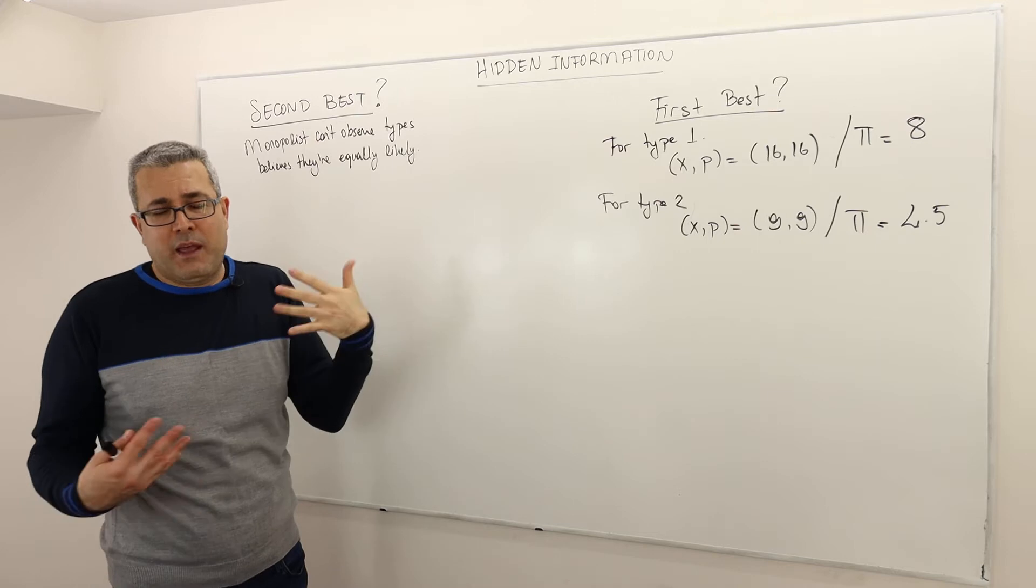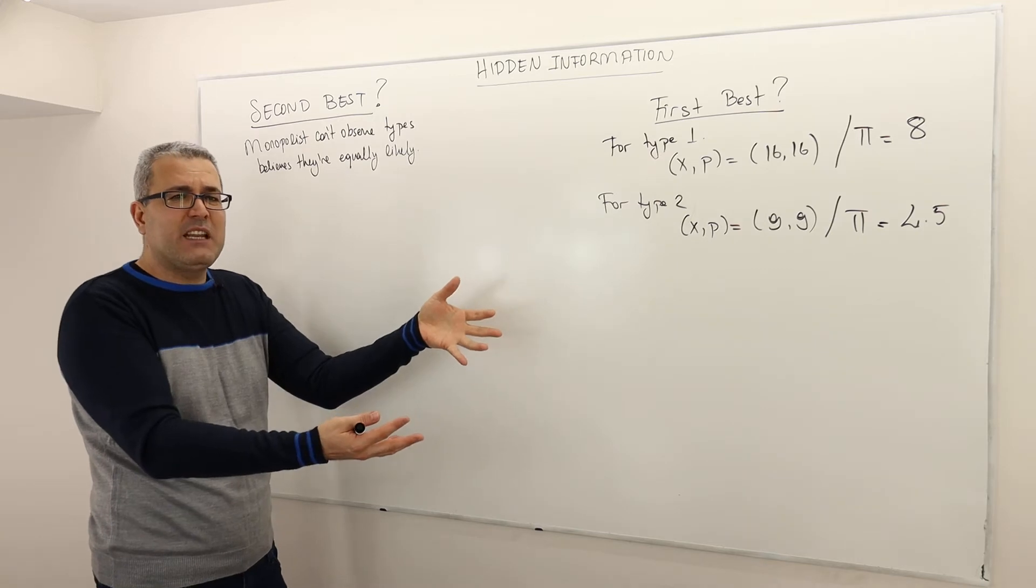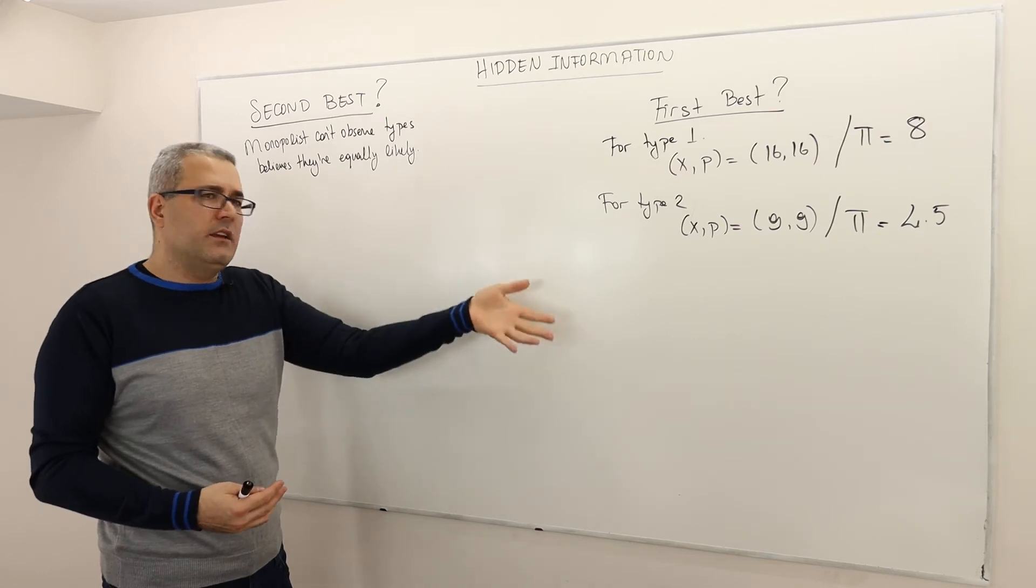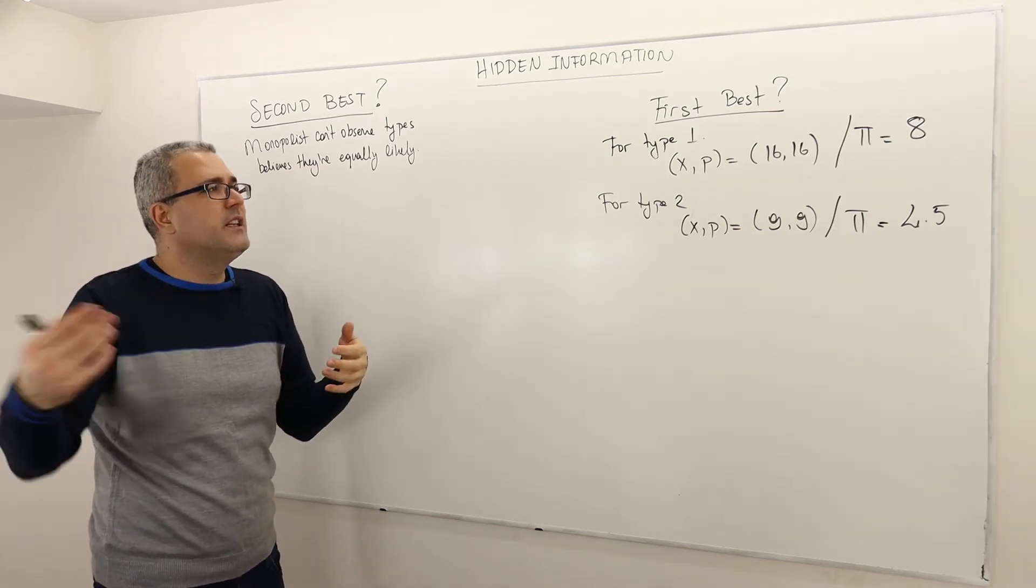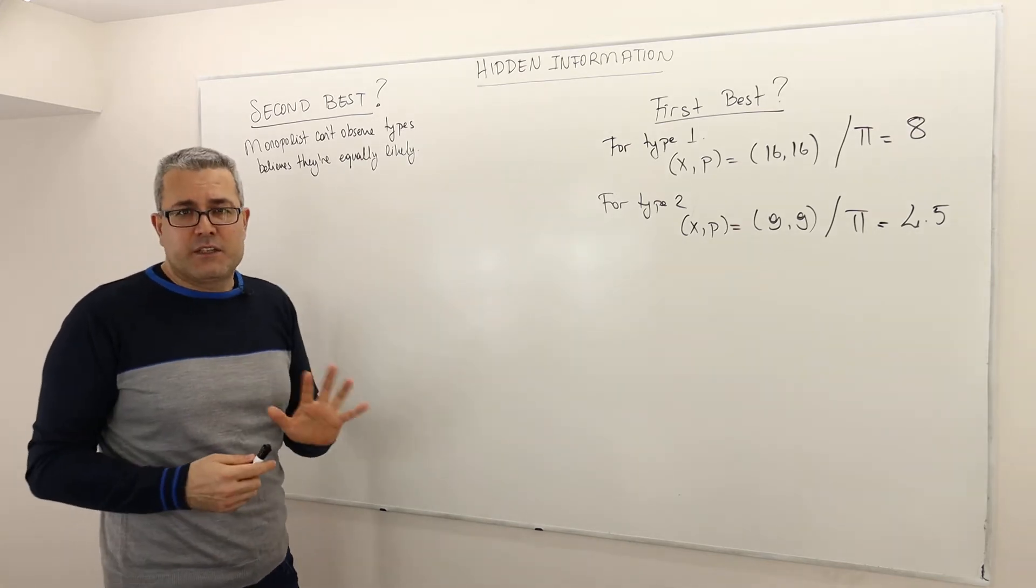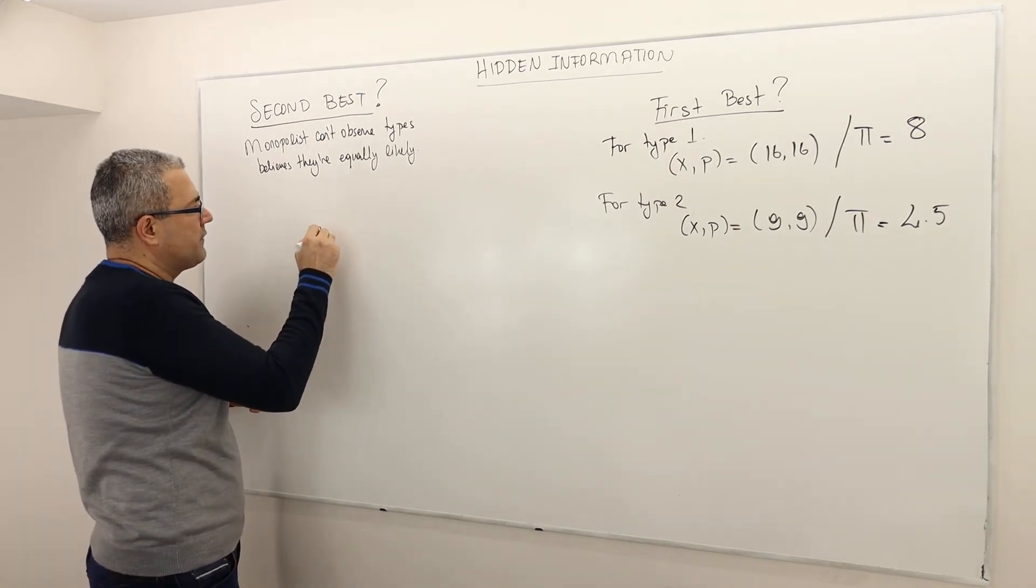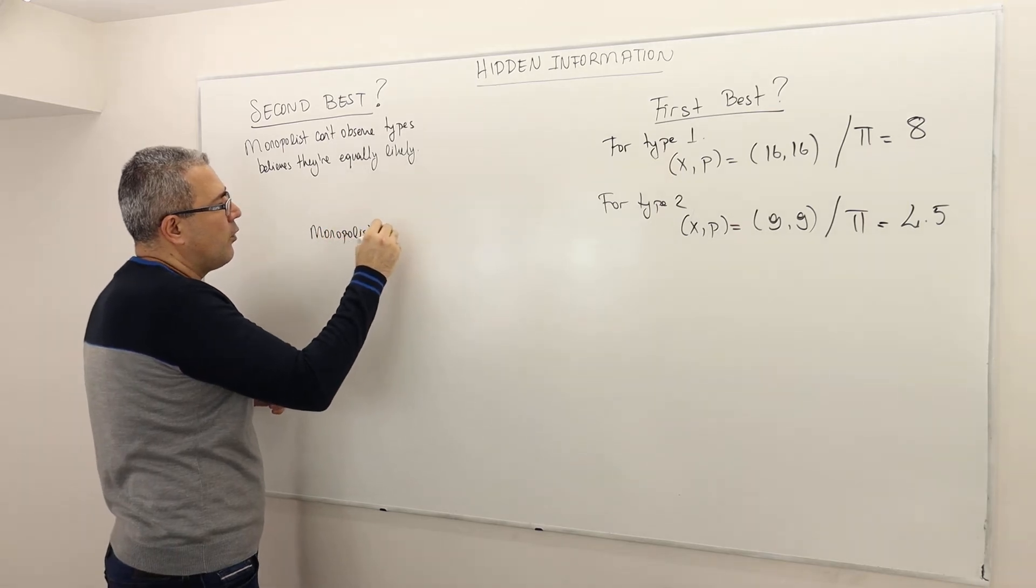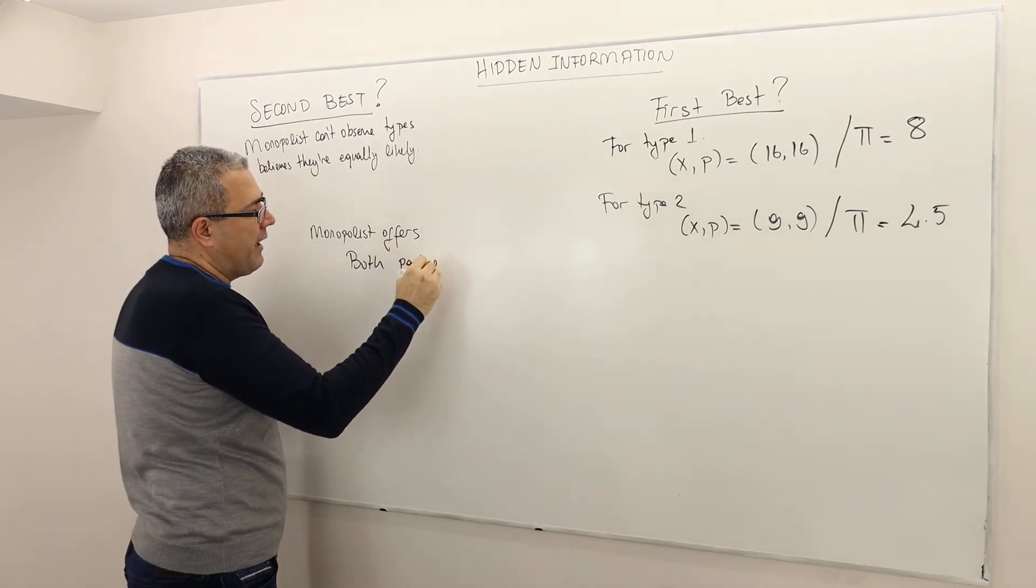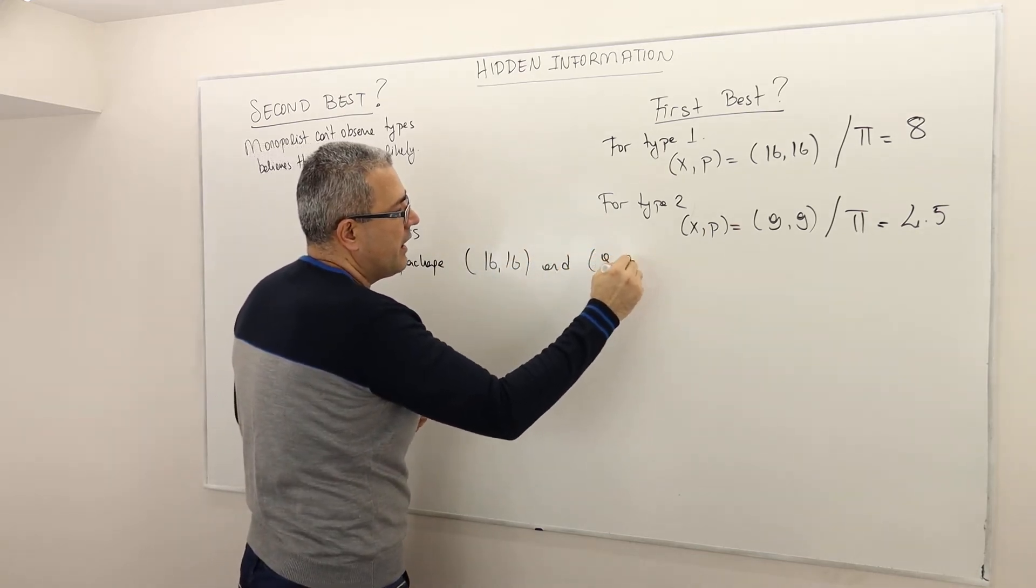The question is, what are going to be those packages? For example, can the monopolist offer these two packages? Here is 16 packs of bottled water, here is nine pack of bottled water. The 16 is priced $16, nine has the price nine. So pick one of them. So what's going to happen?